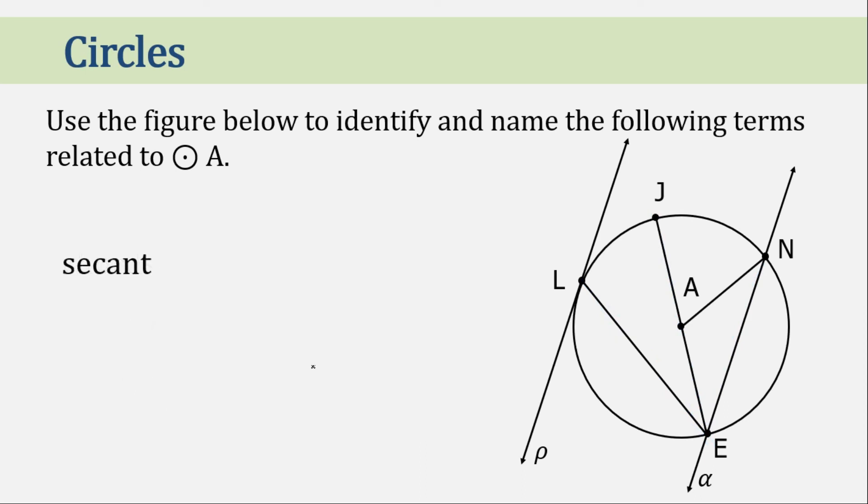A secant. Again, a secant is a line that intersects a circle at exactly two points. In this case, it is line A or line EN. Now, a tangent, it is a line that intersects the circle at exactly one point. That is line P. Now, if I may ask you, what is the point of tangency here? That is point L.